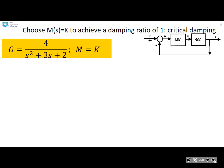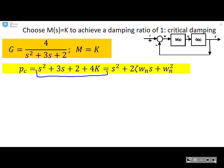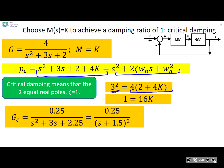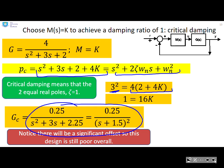Here's an example: Choose K to achieve a damping ratio of 1, which is critical damping. First, find the closed-loop pole polynomial: s²+3s+2+4K. Critical damping means you have two equal real poles, that is zeta=1. This means 3² must equal 4(2+4K), or 1=16K. You can test this, plug the number in, calculate the closed-loop transfer function, and you'll see you have two equal real poles. However, here's the warning: you're going to have significant offset. The closed-loop gain for this example is 0.25/2.25, so your closed-loop gain is very small. So your offset is going to be massive.